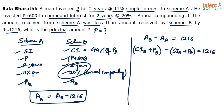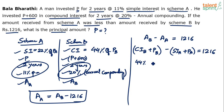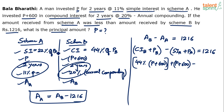Simple interest in A is 22% of P. Now substituting: 44% of (P + 600) plus (P + 600) minus 22% of P minus P equals 1216. Expanding: 44% of P plus 44% of 600 plus P plus 600 minus 22% of P minus P equals 1216.